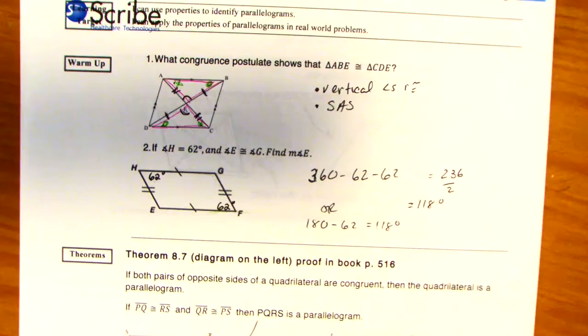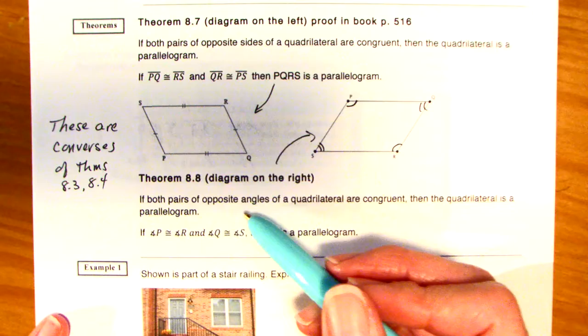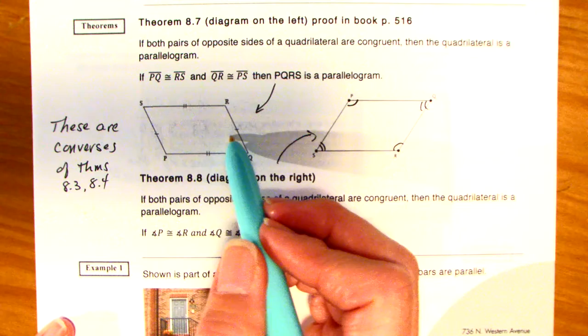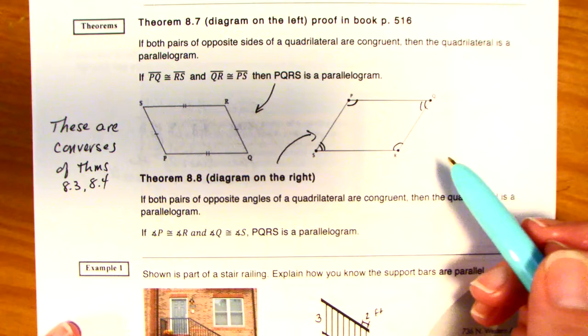Okay, this is where the fun begins, 8.7. So that's the diagram on the left, and then 8.8 is the diagram on the right. So on the left, if opposite sides are congruent, then you have a parallelogram. And here, if opposite angles are congruent, you have a parallelogram. So these are your converses from the theorems we had for 8.3 and 8.4 in the last section.